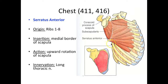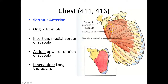Here's a nice view of that wrapping around. We have the ribs one through eight origin here, and then it goes underneath — this is the anterior part of the scapula. We can see part of the spine back here, and it's attaching to that medial border.